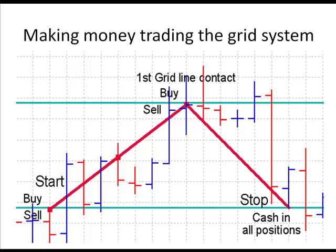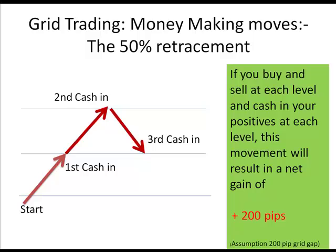The next money-making move is the 50% retracement. You enter a buy and sell at the start, the price goes up to the next level where you enter buy and sell, cash in the positive, and let the negative ride. It then goes up again to the next level where you do exactly the same. Under this movement, the price then moves back to the first level — not your start level, but the first level. You then cash in that leg; you have one buy transaction negative and one sell transaction negative, with the middle sell breaking even, giving three cash-ins and two negatives for a net gain of 200 pips.